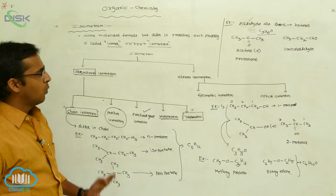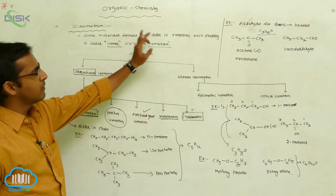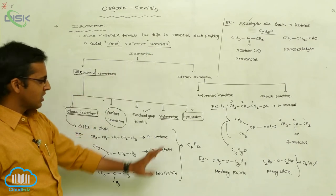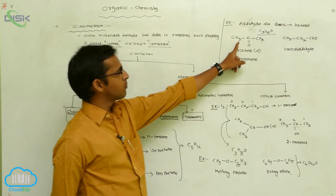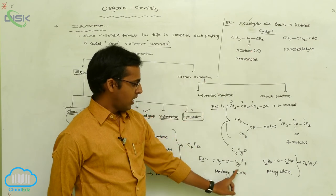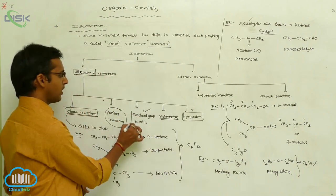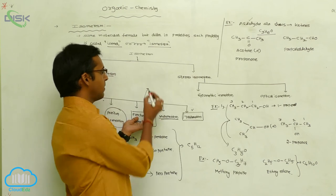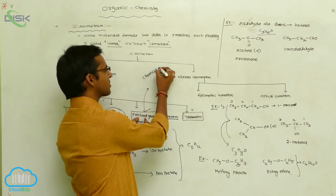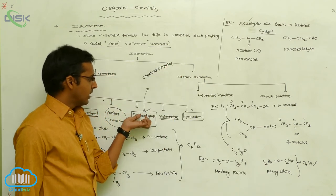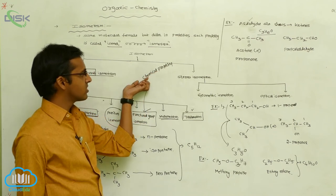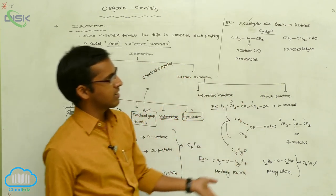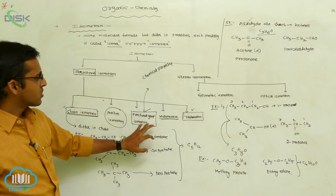To summarize: all isomers have the same molecular formula but differ in their physical or chemical properties — that is called an isomer, and the process is called isomerism. They differ in their chain, position, functional group, or arrangement of alkyl groups around the oxygen. Functional group is an important character — it is mainly involved in chemical reactions and preparation. Different functional groups include ketone, aldehyde, ester, carboxylic acid, cyanide, and nitrile. Those are the examples of functional group isomerism. Thank you.